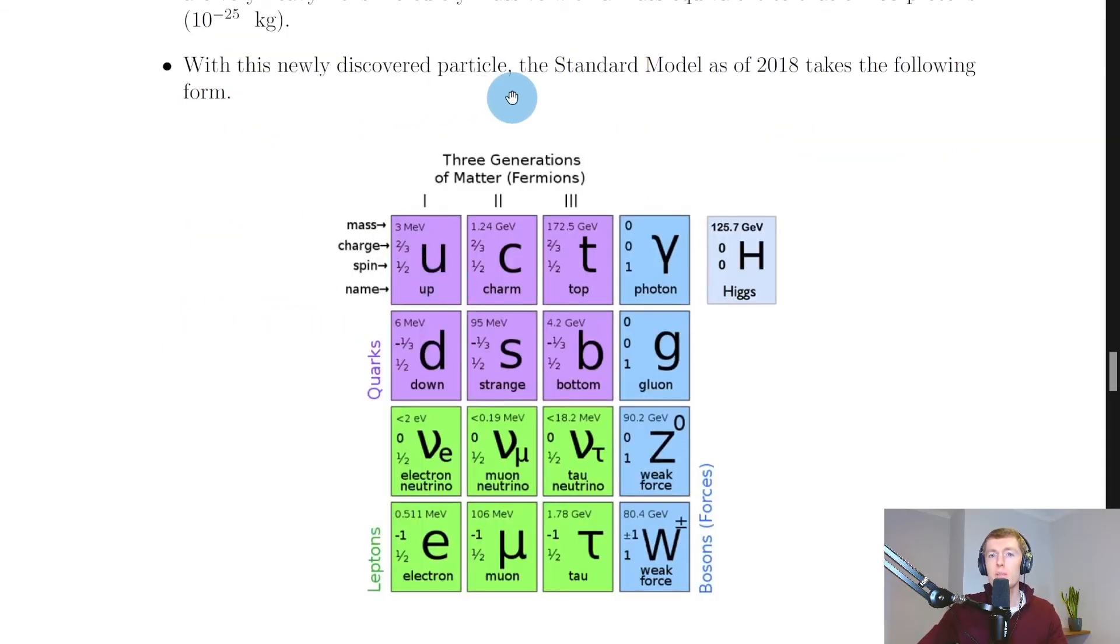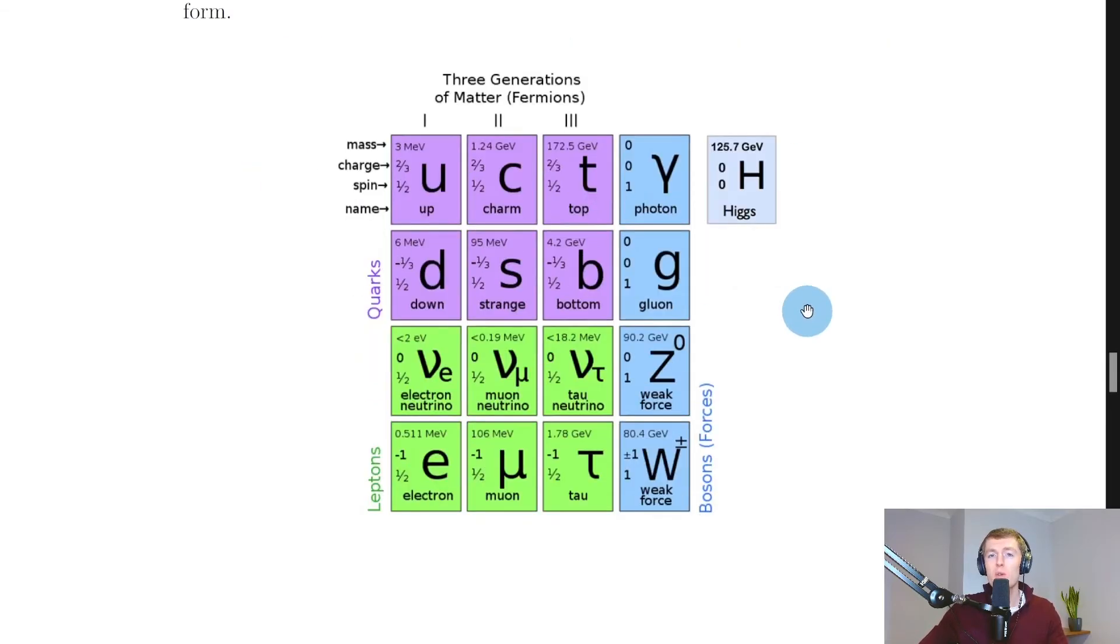So with this newly discovered particle, the standard model as of 2018 takes the following form. Here we have our fully complete diagram of the standard model as of 2018 where we've got our three generations, then we've got our bosons excluding the graviton, remember, because it's not yet been discovered, and then we've got the Higgs boson that's been added on there as well.